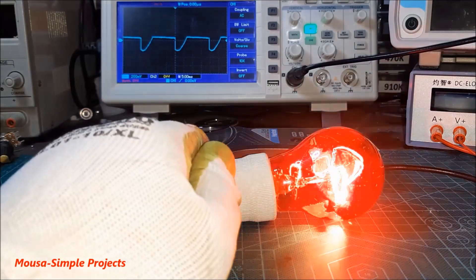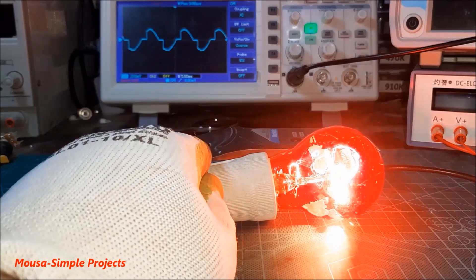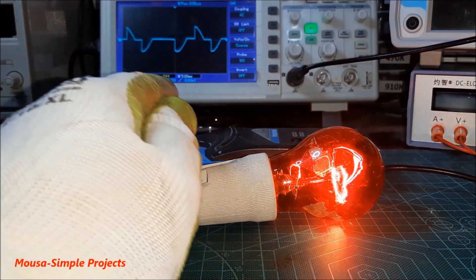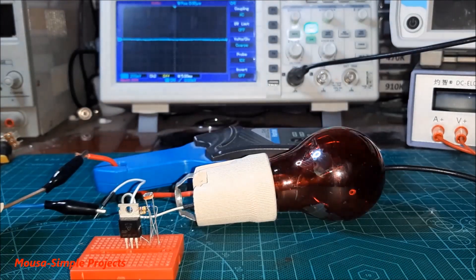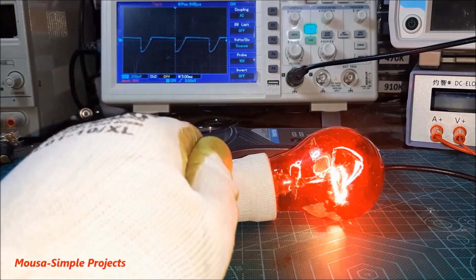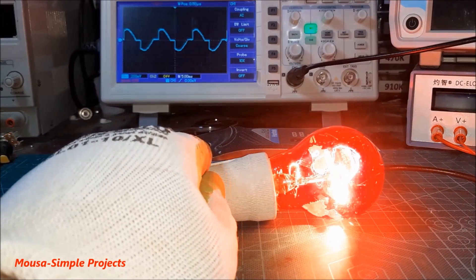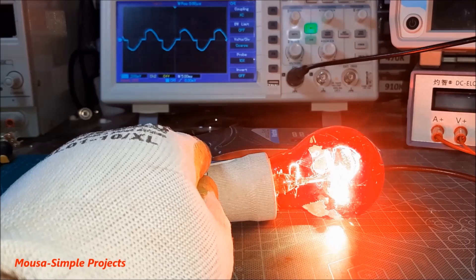The problem with this circuit is that it's working as a dimmer. As you can see here, when I cover the LDR with my hand, the circuit increases the brightness of the lamp slowly. This circuit can kill your LED or CFL lamps because they aren't dimmable.